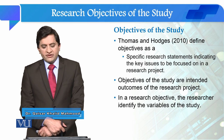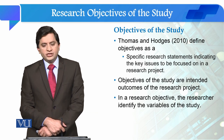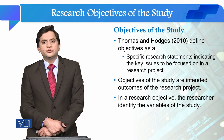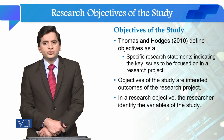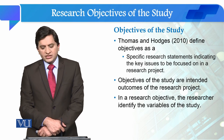Thomas and Hodges define research objectives as a specific research statement indicating the key issues to be focused on in our research project. Research objectives are specific research statements which are relevant to the subject of the study, and the objectives of the study are the intended outcomes of the research project.